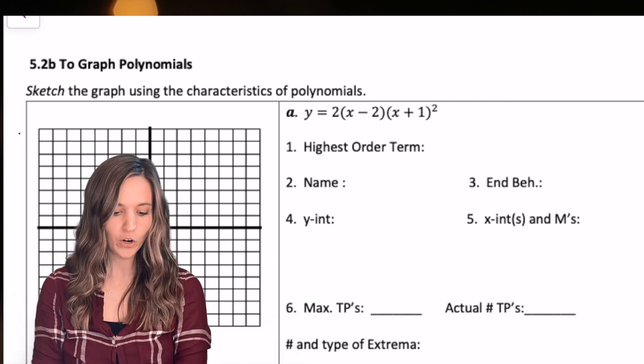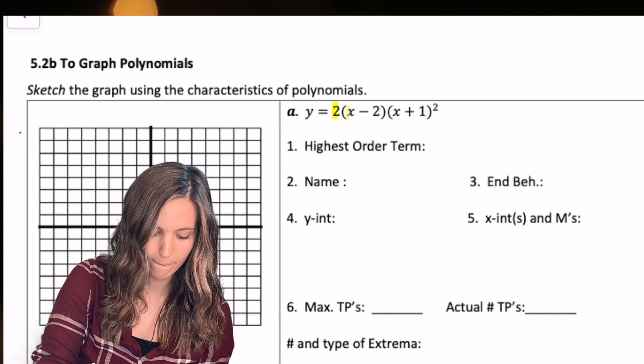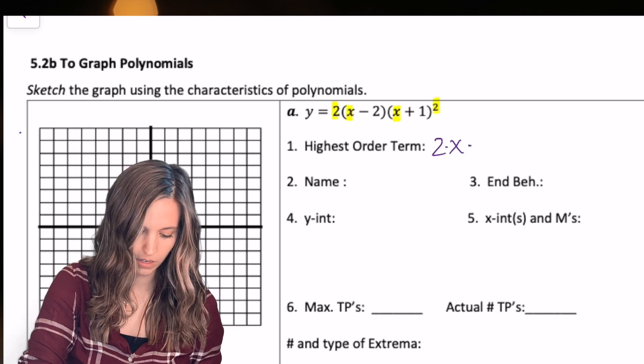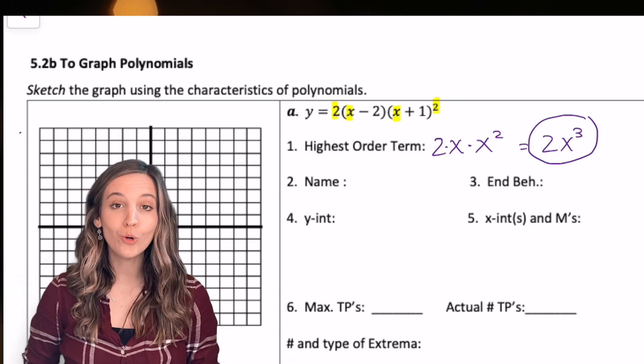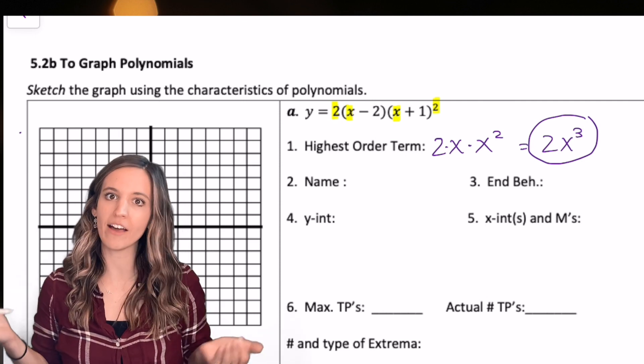Let's look at example one. First, let's find the highest order term. My highest order term is 2x cubed, so that means I have a cubic.